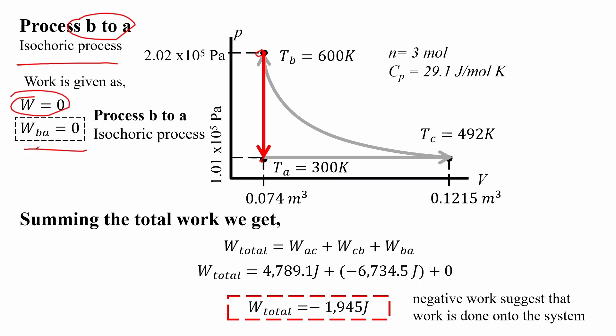The work done by the cycle A, B, and C is equal to negative 1945 Joule. Negative work suggests that work is done onto the system according to the sign convention.